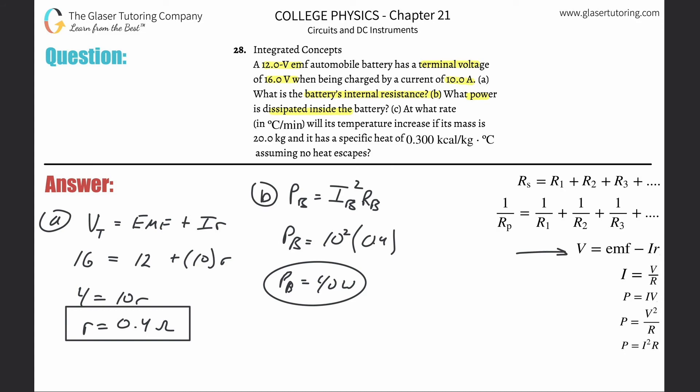Letter C: at what rate in degrees Celsius per minute will its temperature increase if its mass is 20 kilograms and it has a specific heat of 0.3 kilocalories per kilogram, assuming no heat escapes?